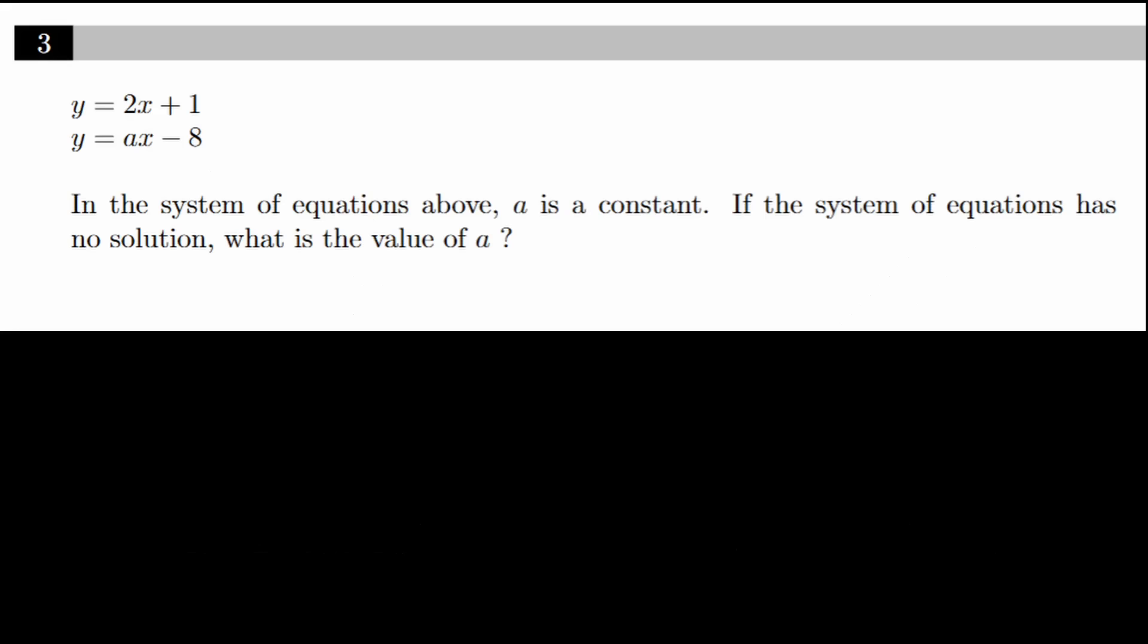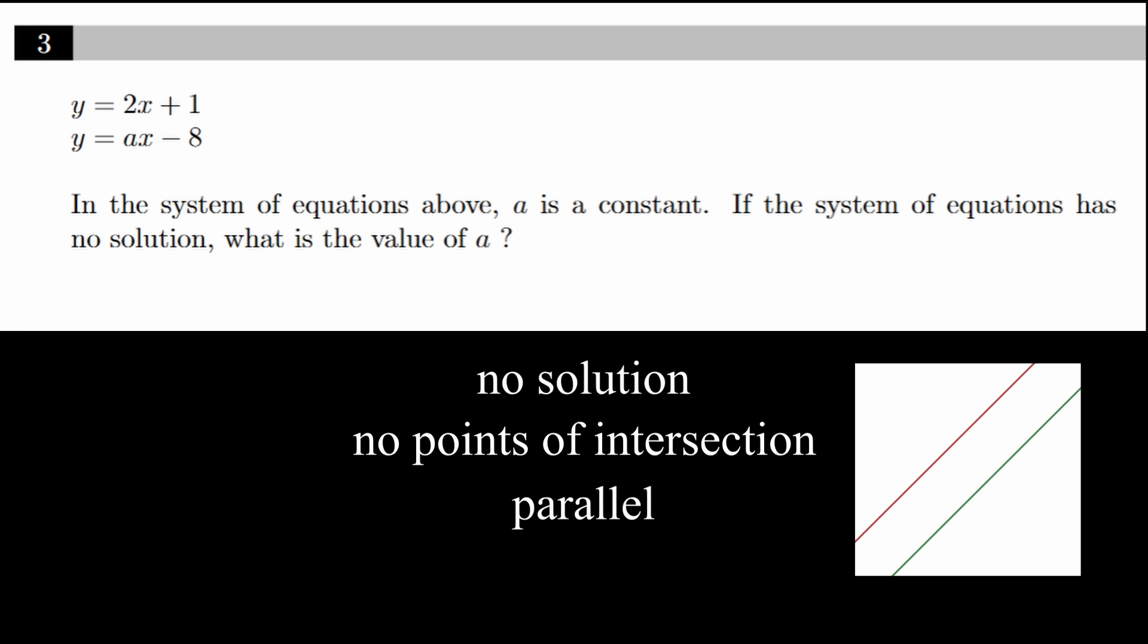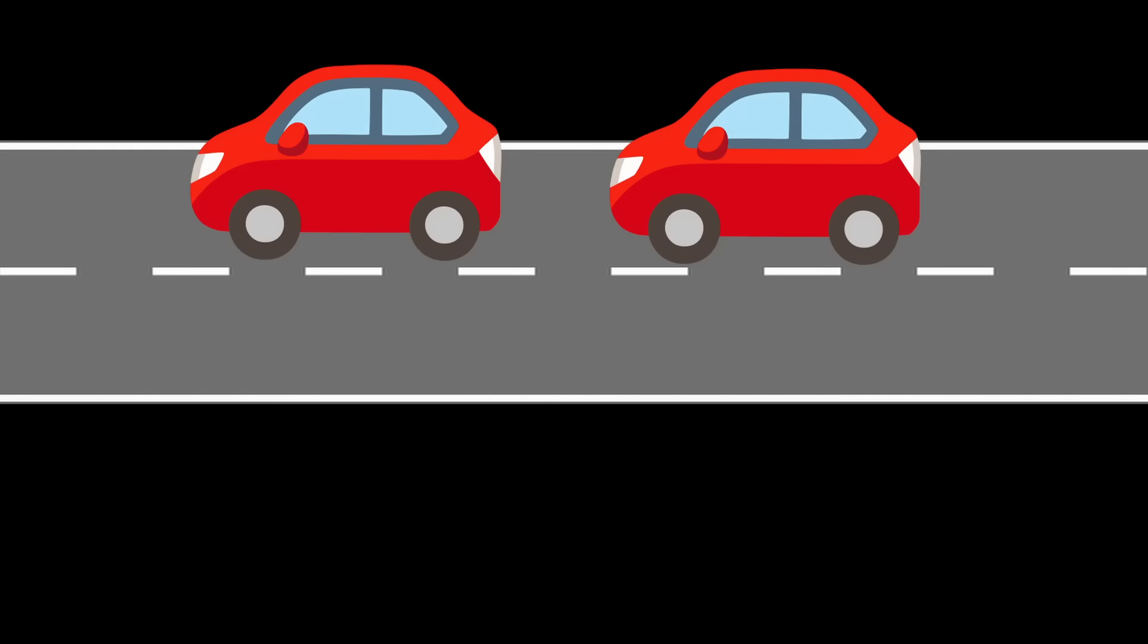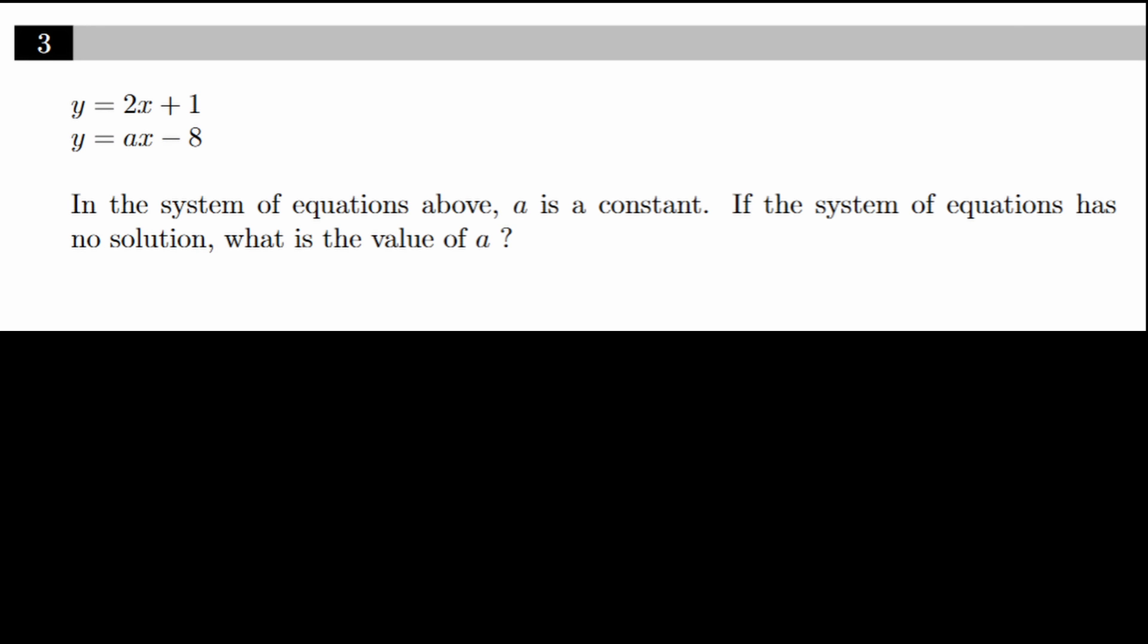For example, take this problem. You're given two lines and asked if the system of equations has no solution, what is the value for a? Well, if two lines have no solution, that means they never intersect. If two lines never intersect, that means they're parallel. If two lines are parallel, they share the same slope. I like to think of this as two cars traveling one behind the other. If they're going the exact same speed, they're never going to crash, just like how two lines that increase at the same rate are never going to intersect. So this question is very simple. We just want the slope of the second equation to be the same as the slope of the first equation. So A equals two.